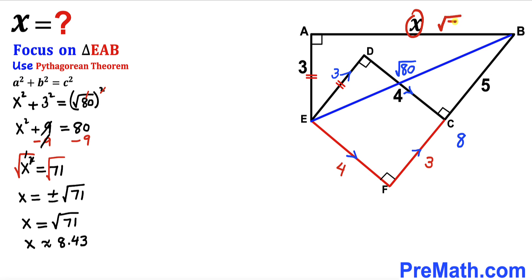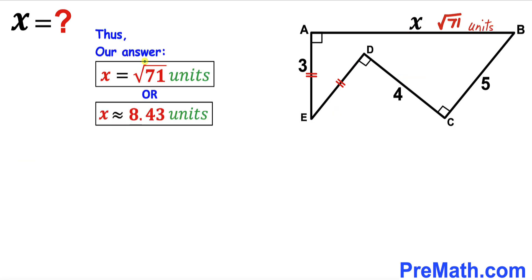So our x value turns out to be √71 units, approximately equal to 8.43 units. That's our final answer. Thanks for watching, and please don't forget to subscribe to my channel and find more exciting videos. Bye!